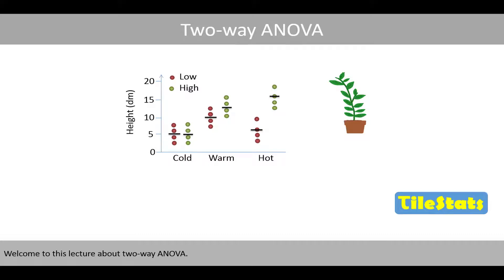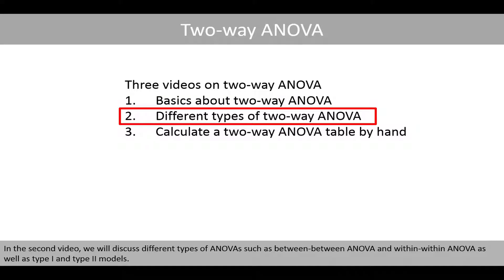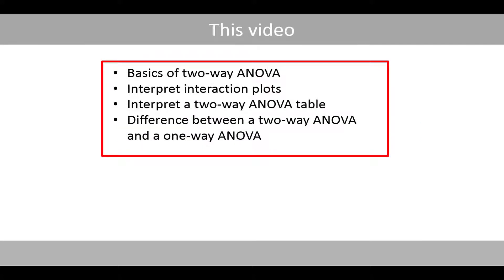Welcome to this lecture about two-way ANOVA. This lecture consists of three videos, where the first video introduces the basics of the two-way ANOVA. In the second video, we'll discuss different types of ANOVAs, such as between-between ANOVA and within-within ANOVA, as well as type 1 and 2 models. In the third video, we'll calculate the two-way ANOVA by hand so that we fully understand how the ANOVA table is generated. In this video, we'll go through the basics of a two-way ANOVA and interpret the interaction plots.